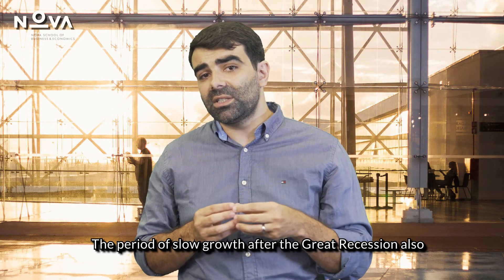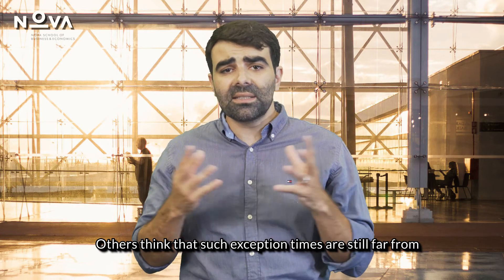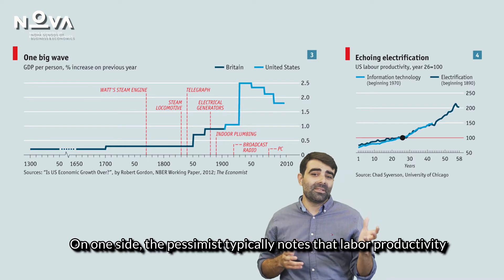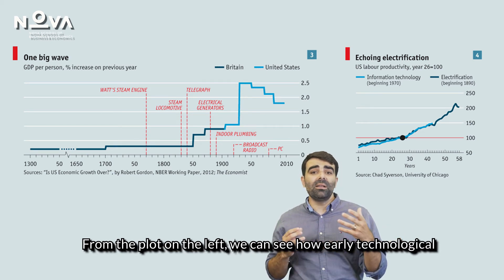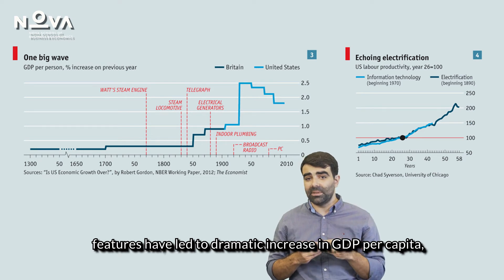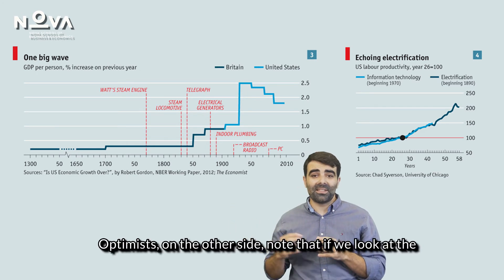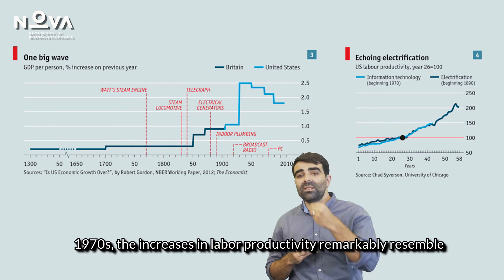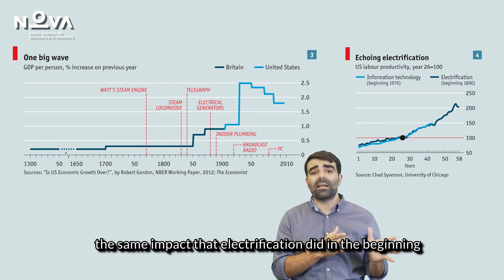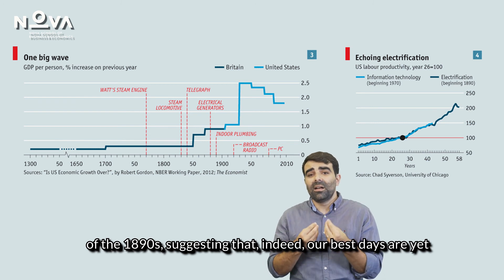The period of slow growth after the Great Recession also contributed to some scholars thinking that the golden age of compounding innovation was coming to an end. Others think that such exceptional times are still far from being over. On one side, the pessimists typically note that labor productivity has been slowing down in the US. From the plot on the left, we can see how early technological breakthroughs led to dramatic increases in GDP per capita, but these seem to have slowed down since the 50s. Optimists, on the other side, note that if we look at the impact of information technologies since their inception in the 1970s, the increases in labor productivity remarkably resemble the same impact that electrification did in the beginning of the 1890s — suggesting that indeed, our best days are yet to come.